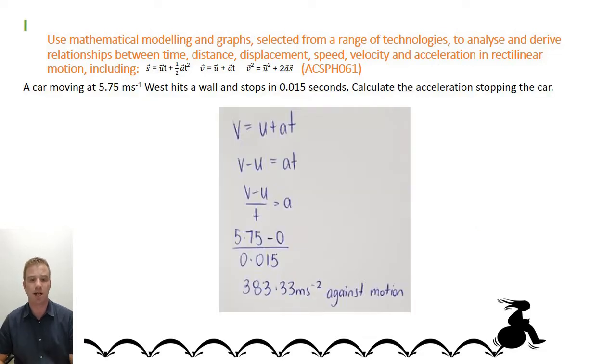Now let's have a look at this question. A car moving at 5.75 meters per second west hits a wall and stops in 0.015 seconds. Calculate the acceleration stopping the car. Now I've got the equation here: v equals u plus at. Rearrange that equation to find a.